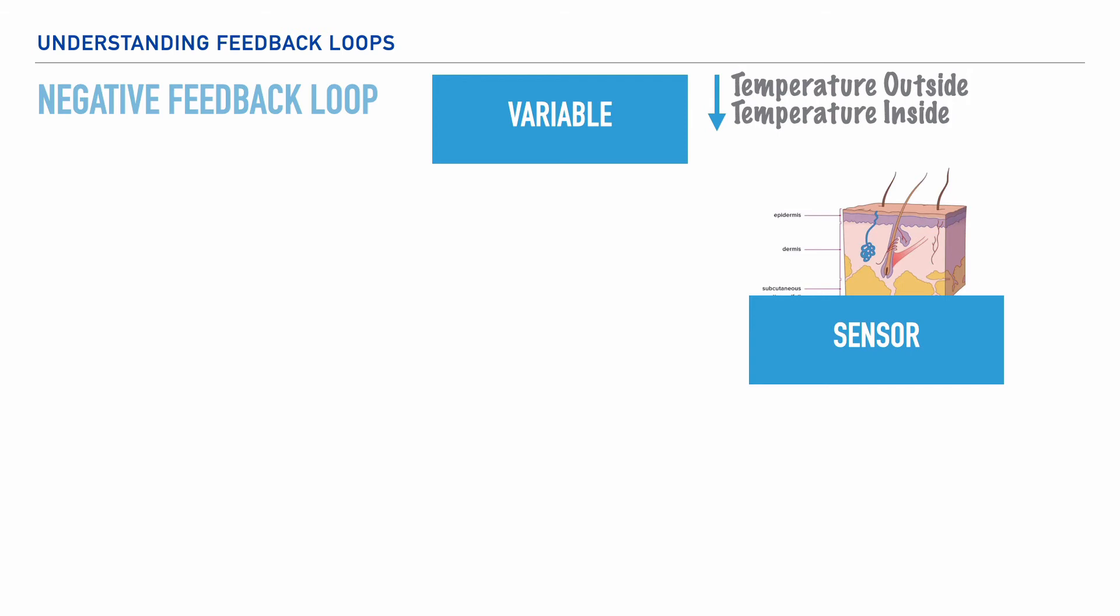Next, the message received by the skin communicates with the brain. And this happens specifically in one component of the brain that's responsible for the regulation of body temperature, which is called the hypothalamus. And you may be able to see it here, noted by the lightly shaded green area.